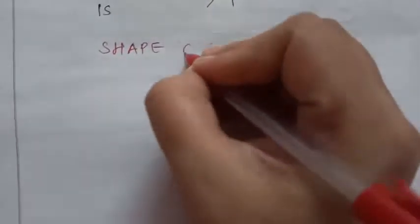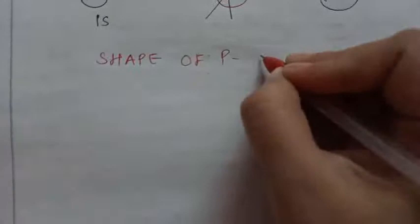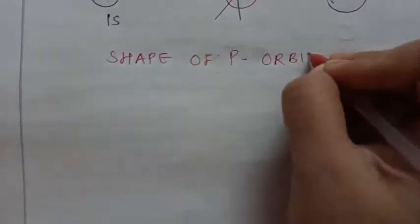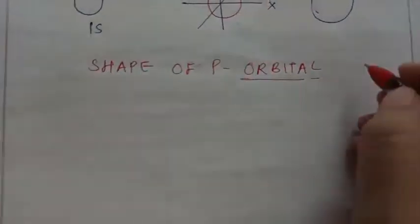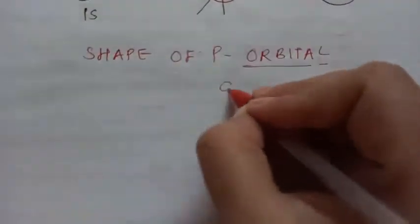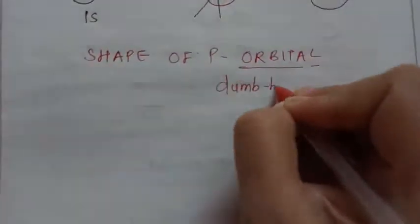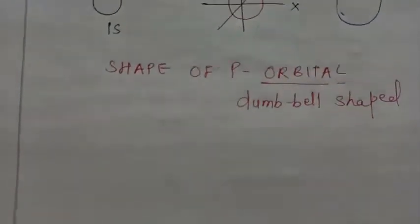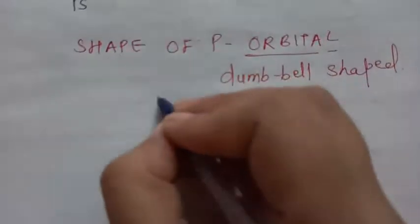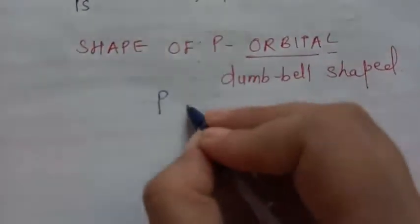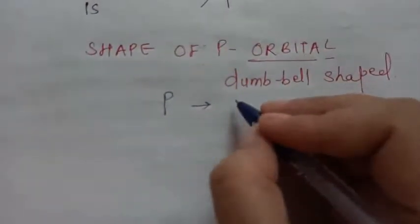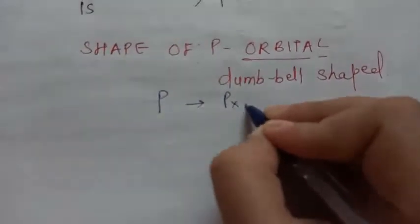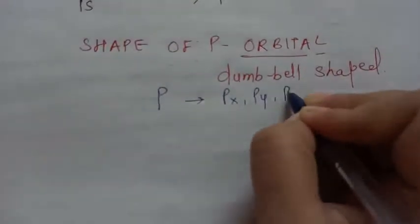Now let us talk about the shape of P orbital. So as you already know, P orbital is dumbbell shaped. So one more thing, if we talk about P orbital, I told you there are three subshells in P. They are Px, Py and Pz.